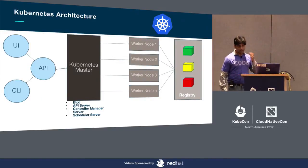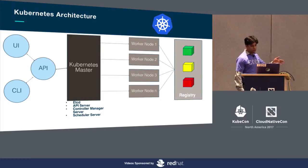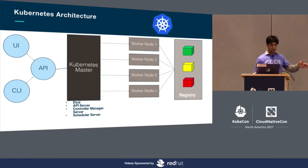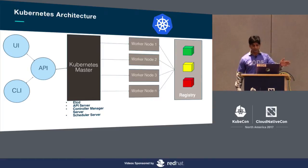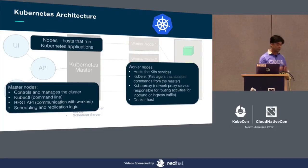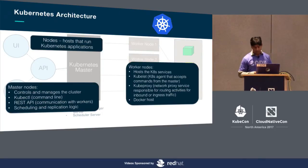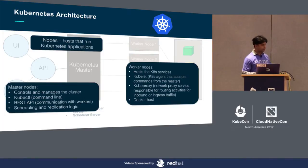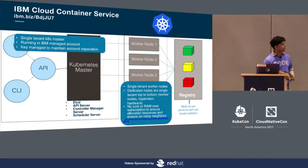We are all aware of the Kubernetes architecture. Any interaction we do with Kubernetes through our UI, CLI, or API goes to the Kubernetes master. We have slave nodes which are responsible for running your workloads — they run the kubelet, kubeproxy, and Docker daemons, serving your workloads on top of those slave machines.